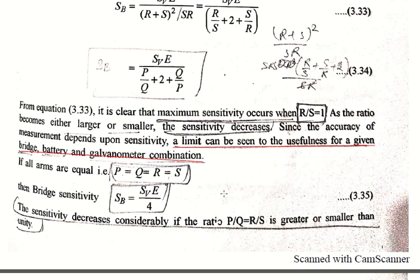In this lecture we studied the Wheatstone bridge method and the sensitivity of the bridge. This topic is quite large, so we will continue in the next lecture, where we will study galvanometer current, advantages of the method, precautions, and the precision resistance measurement method using the Wheatstone bridge. One remaining method for measurement of medium resistances — the Carey Foster bridge method — will also be covered in upcoming lectures.